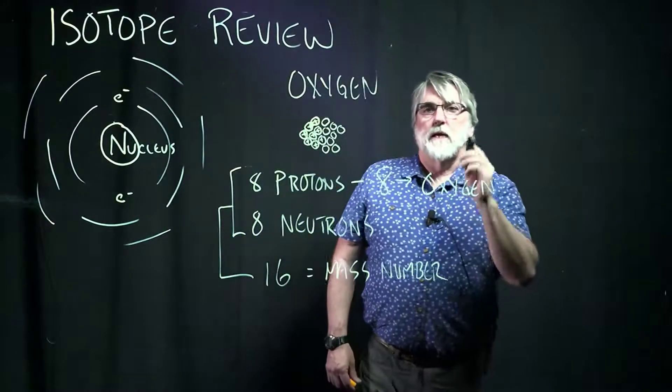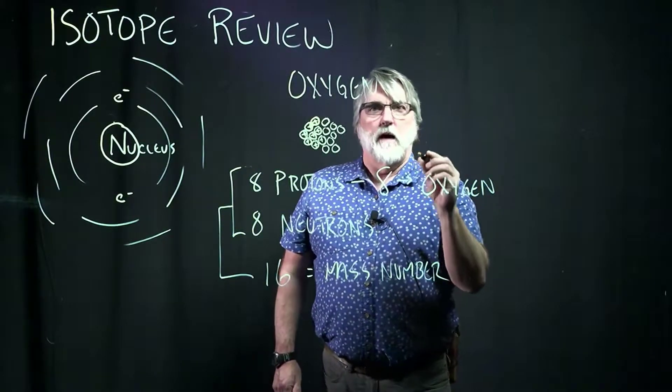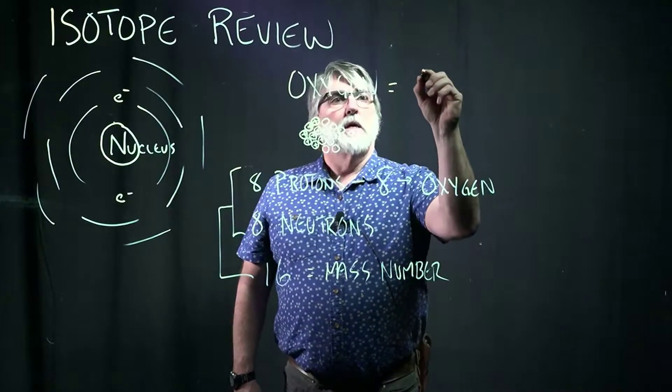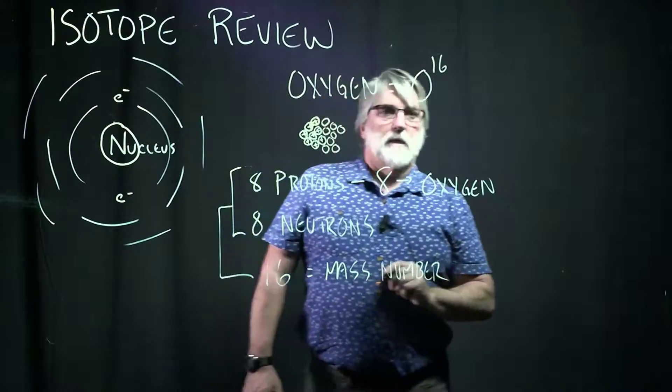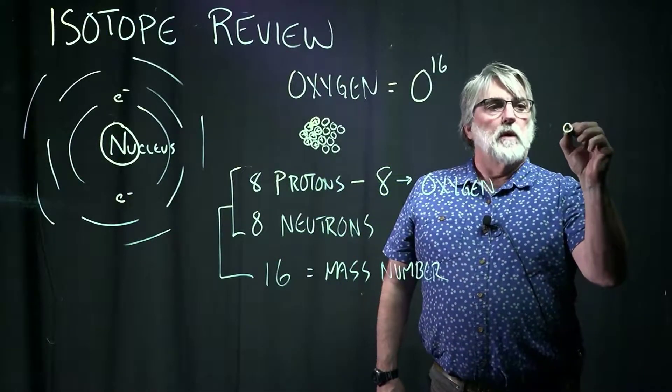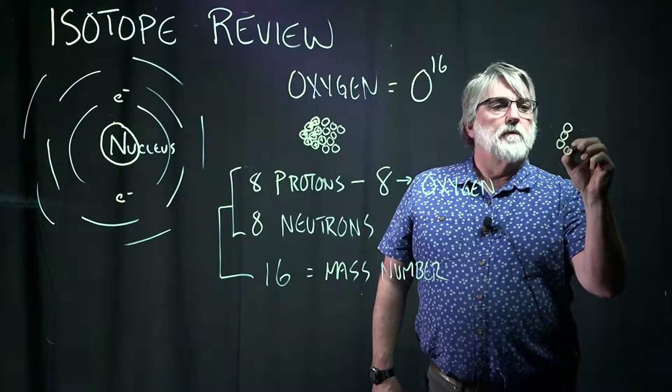But there is another isotope of oxygen. So this is the most common isotope, this is O16, because of the mass number. But now we can have oxygen that has one, two, three, four...